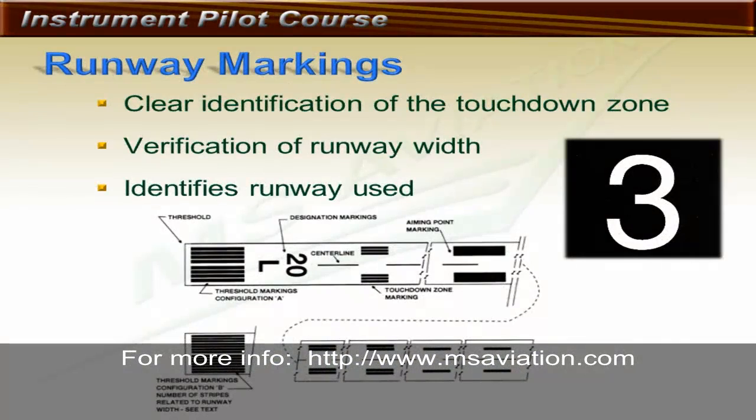Runway markings are part of an instrument landing system. They allow the pilot to see the touchdown zone more clearly, see the width of the runway, and determine how much runway has been used.